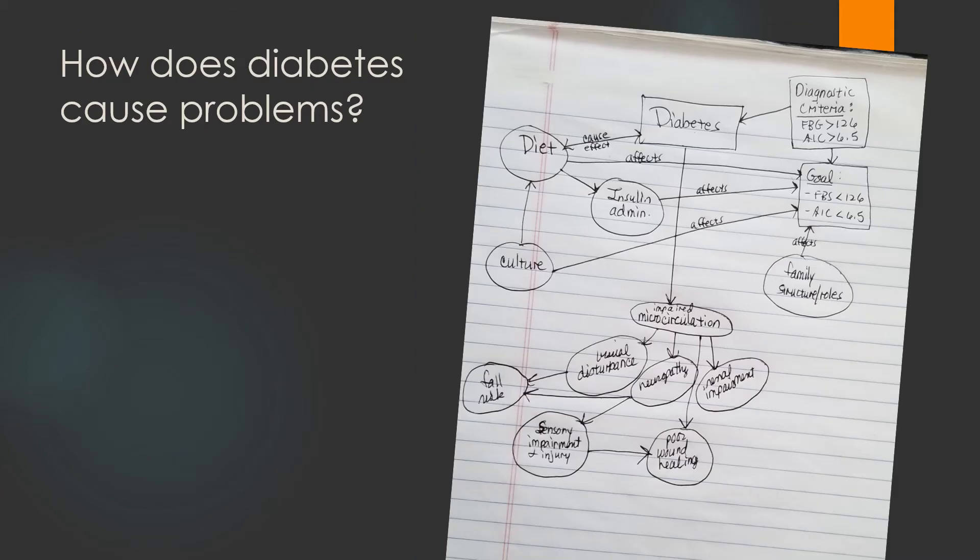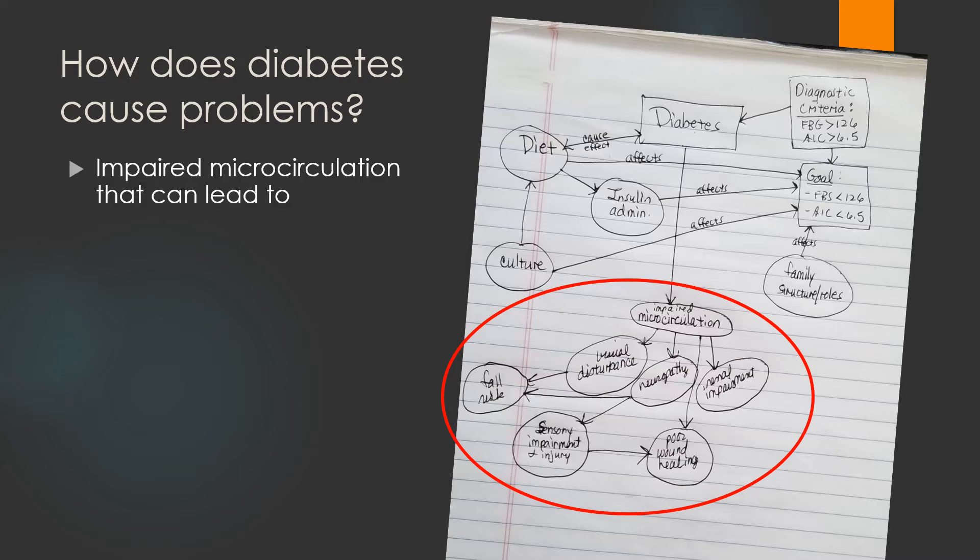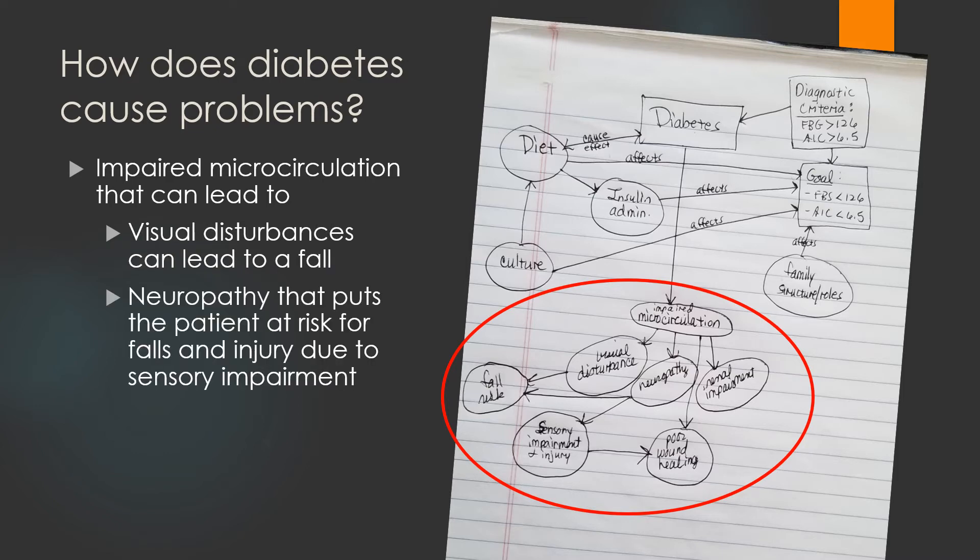How can having a diagnosis of diabetes cause problems? As the blood thickens with glucose, think of it as syrup, it impairs circulation in the smallest of blood vessels, affecting the flow of oxygen and nutrients to the most peripheral cells, whether in skin or organs. Impaired microcirculation can lead to visual disturbances, which can lead to a fall. Neuropathy that puts the patient at risk for falls and injury due to sensory impairment can occur. Poor wound healing and renal impairment.